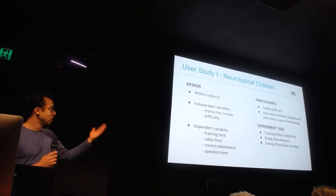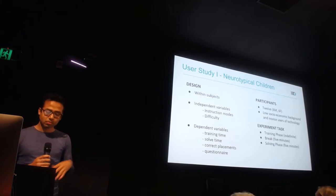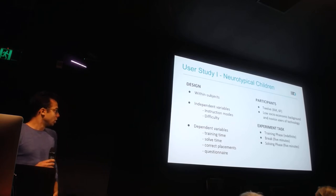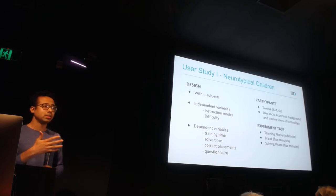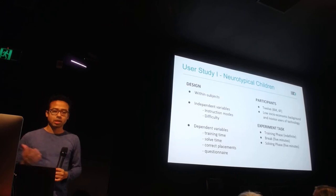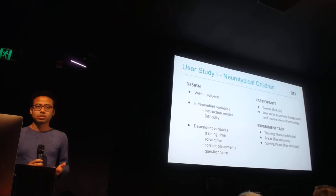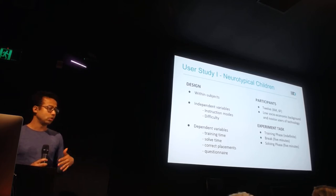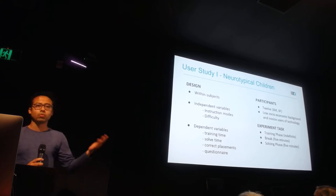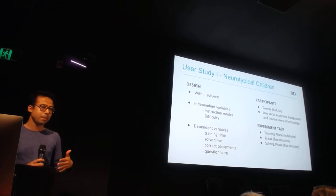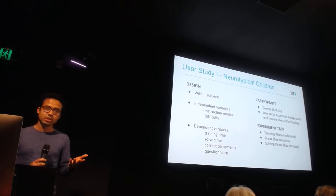Variables were counterbalanced. We collected their training time and allowed them to train as long as they wanted until they solved the puzzle. Then they had to solve it within five minutes. We did a pilot study and found that without time restrictions, they would go on forever, so we restricted the time. We collected correct placements if they didn't finish and had some questionnaire questions. Participants were equally divided between male and female.